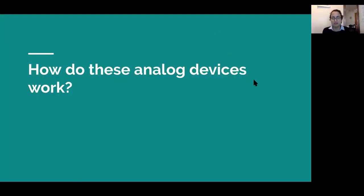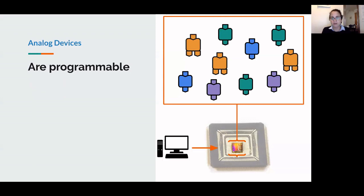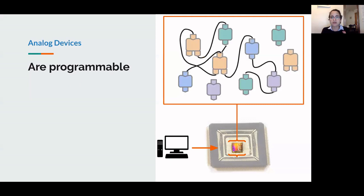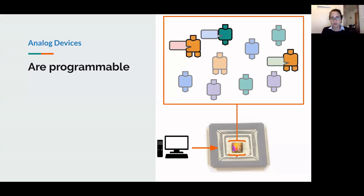So how do these analog devices execute computation? These analog devices contain collections of computational blocks and, as mentioned, they are digitally programmable. There are two ways to program them: the first is enabling connections within the device to form circuits, and the second is setting bits within each block, which changes the function implemented by that block. You set bits in the blocks you're interested in to get the desired functions.